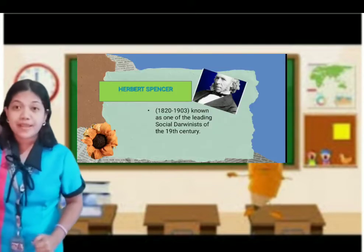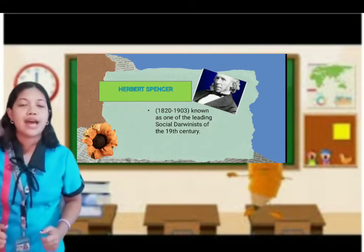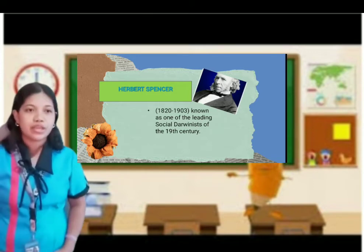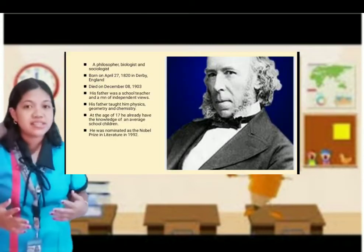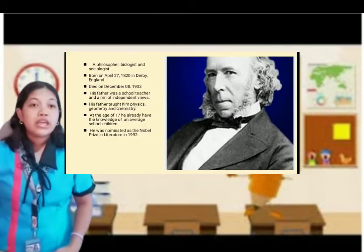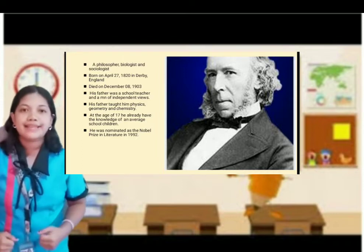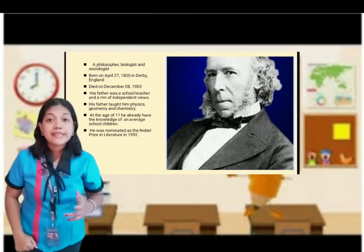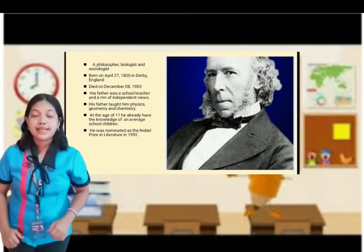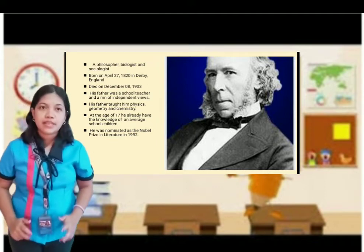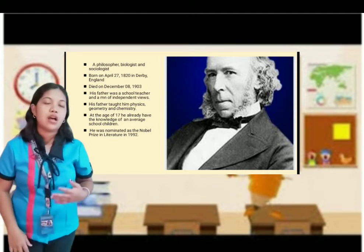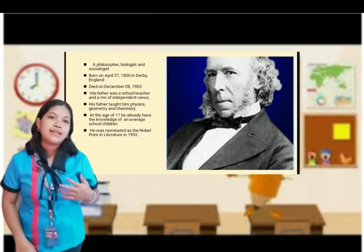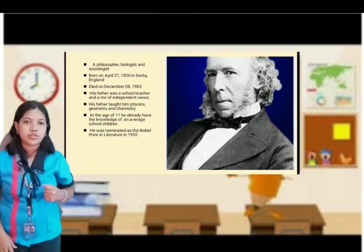Who is Herbert Spencer? Herbert Spencer is known as one of the leading social Darwinists of the 19th century. He is a philosopher, biologist, and sociologist. He was born on April 27, 1820 and died on December 8, 1903. His father taught him physics, geometry, and science, which is why at the age of 17 he already had the knowledge of an average school child. In 1992, he was nominated as a Nobel Prize in Literature.